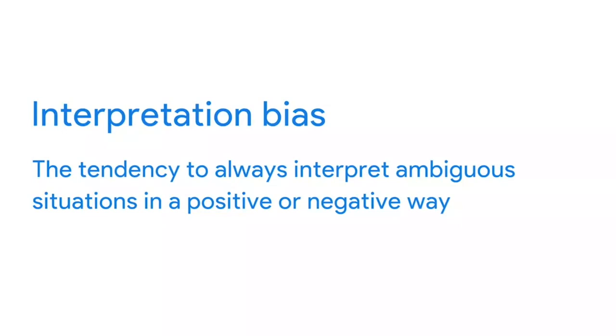Another common type of data bias is interpretation bias — the tendency to always interpret ambiguous situations in a positive or negative way. Let's say you're having lunch with a colleague when you get a voicemail from your boss asking you to call her back. You put the phone down in a huff, certain that she's angry and you're on the hot seat for something. But when you play the message for your friend, he doesn't hear anger at all — he actually thinks she sounds calm and straightforward. Interpretation bias can lead to two people seeing or hearing the exact same thing and interpreting it in a variety of different ways, because they have different backgrounds and experiences.